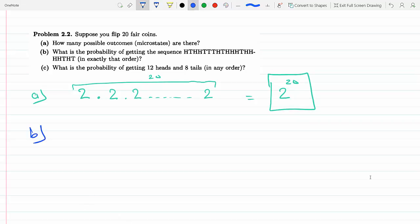What's the probability of getting the sequence in exactly that order? Well, in exactly that order that means those are 20 coins. I need the first coin to be exactly heads, the second coin to be exactly tails, and so on all the way to the 20th coin to be exactly tails. So there's only one way we can get